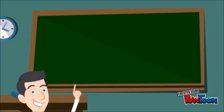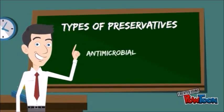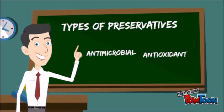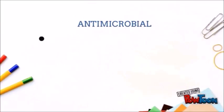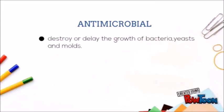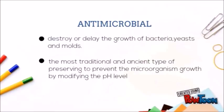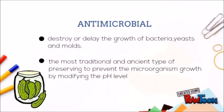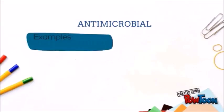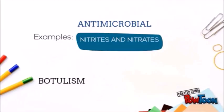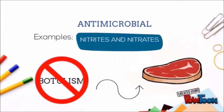There are three types of preservatives: antimicrobial, antioxidant, and anti-enzymatic. Antimicrobial preservatives destroy or delay the growth of bacteria, yeast, and mold. This method is the most traditional and ancient type of preserving, such as pickling or adding honey, to prevent microorganism growth by modifying the pH level. Examples of usage are nitrates and nitrites to prevent botulism in meat.